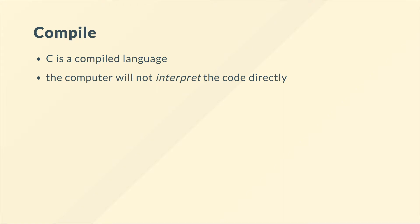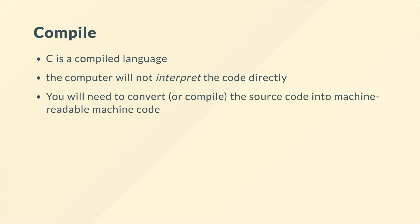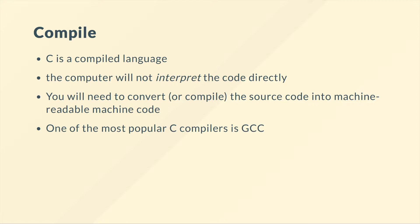C is a compiled language, meaning your computer cannot understand C code directly. A compiler converts that code into machine-readable code. One of the most popular compilers is the GNU C compiler, often called GCC. There are other compilers like the Microsoft Visual C compiler and the Intel C compiler, but GCC is very good and a great one to start with.